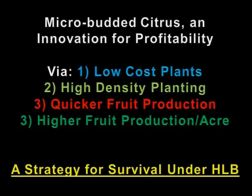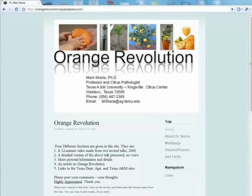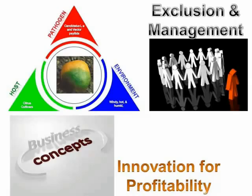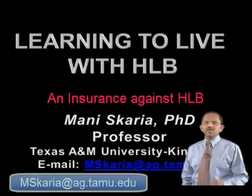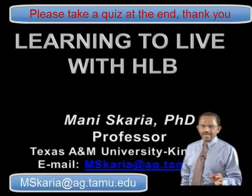It is cheaper. It yields fruit two years ahead of conventional trees. It has a good history of success in Texas. Learning to live with HLB is a good strategy combining two core concepts of plant pathology. If you adopt a core concept of innovation for profitability from the business world, you will generate insurance against HLB. However, to make it happen, the citrus industry will have to start thinking differently. There can be changes made for the better. Thank you for listening.